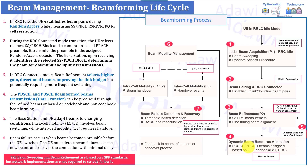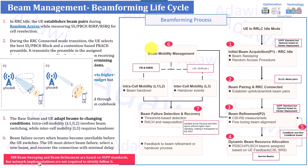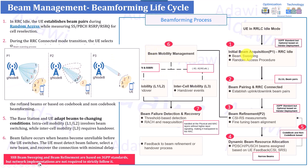Initially, whenever the user or UE or device is in idle mode, it will start scanning the network — for example, scanning the synchronization signal, primary synchronization signal, and secondary synchronization signal — until it acquires the so-called SSB. If you look into the figure on the left side, this is called initial beam acquisition, which is usually called procedure P1.